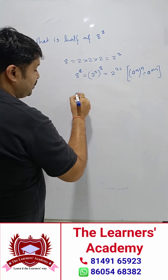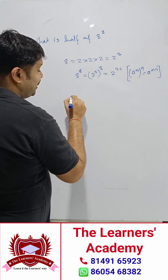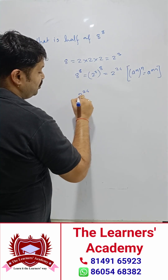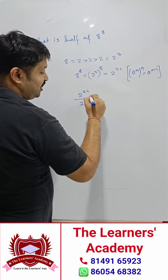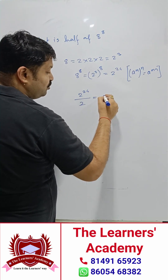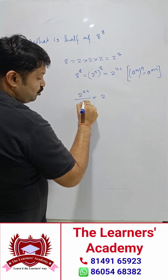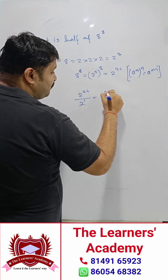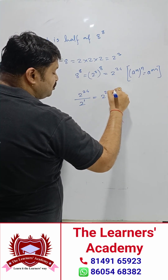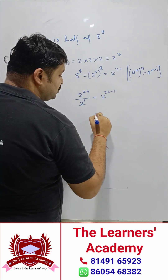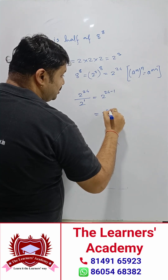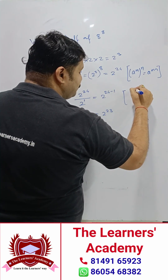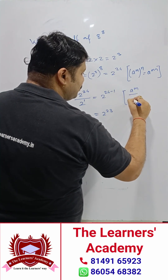So I can write the expression as 2 to the power of 24 divided by 2. Since 2 has no explicit power, its power is 1. Applying the identity, this becomes 2 to the power of 24 minus 1, which is 2 to the power of 23.